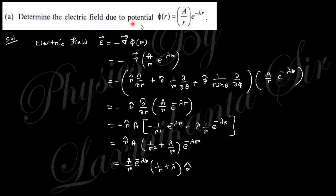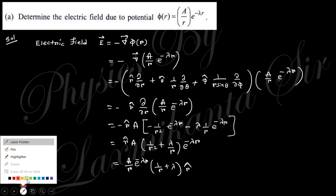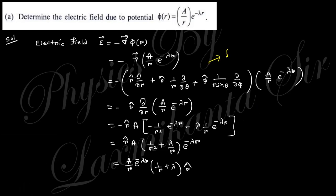The first question says: determine the electric field due to the given potential. From the potential, you can get the electric field using the formula: the electric field is the minus gradient of phi, where phi is the potential. So you just put the expression of phi and the gradient in spherical polar coordinates. This is the gradient in the spherical polar coordinate system.